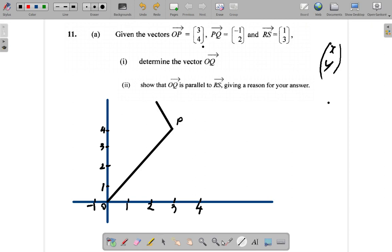So remember, you were above 3. Negative 1 means you go 1 to the left. So you're now above 2. And you were beside 4, and you go 2 up. So you should be beside 6. So that's what should be happening here. So let me put 6 up here. So this is Q.